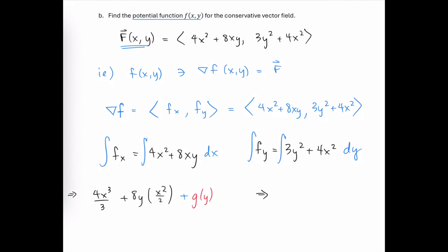Now let's evaluate the integral with respect to y. The antiderivative of 3y squared with respect to y is 3y cubed over 3, which simplifies to y cubed, plus the antiderivative of 4x squared with respect to y is 4x squared times y. Again, we could have had some function of x that would be treated as a constant when we take the first partial of the potential function with respect to y.